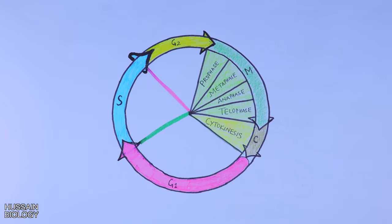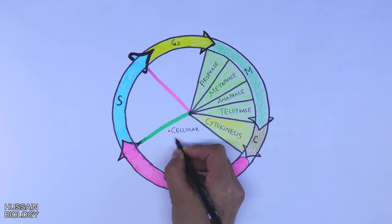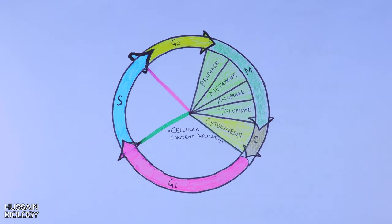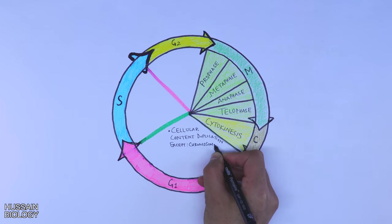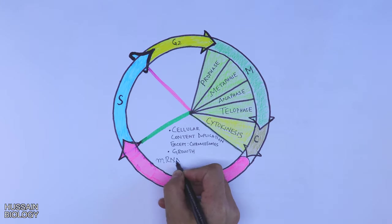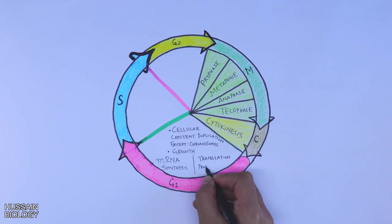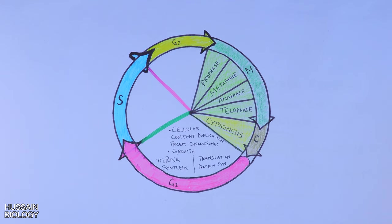Starting from the G1 phase of interphase: in the G1 phase there is cellular content duplication except the chromosomes, like we get the mRNA synthesis—that's transcription—and we get protein synthesis—that's translation. When everything is good, when there are no errors, the cell proceeds into S phase.